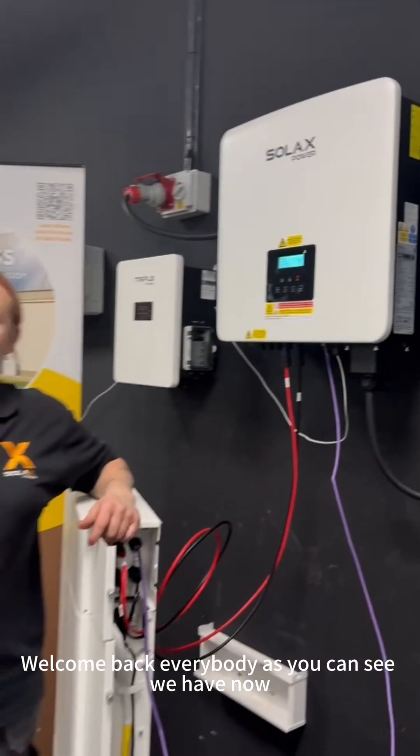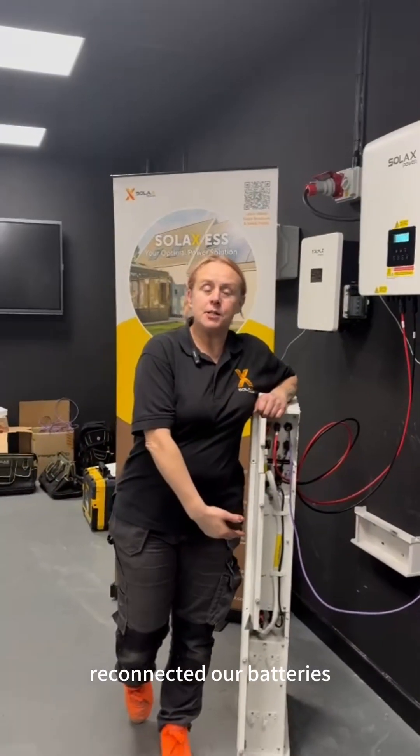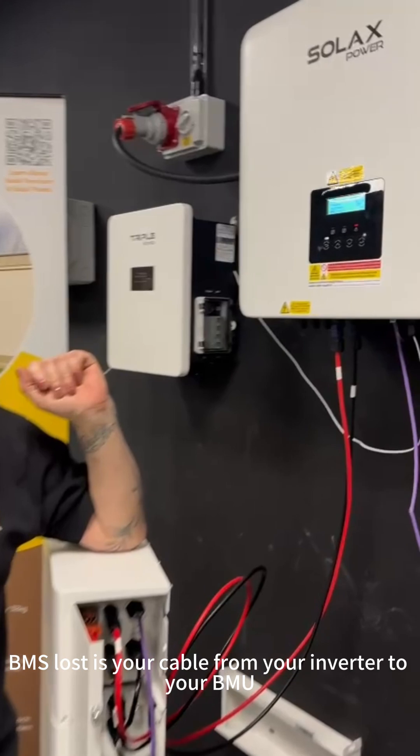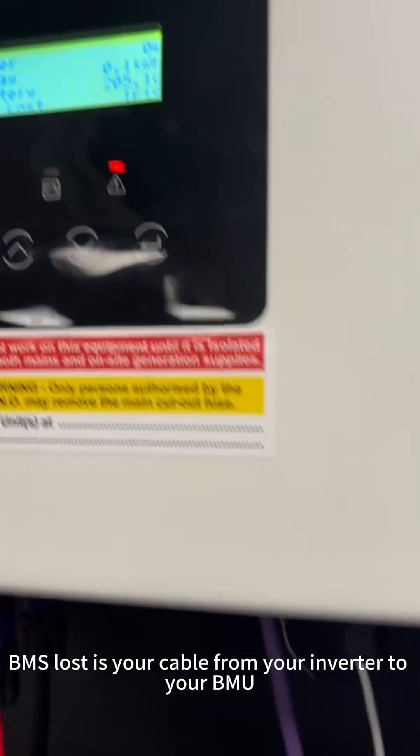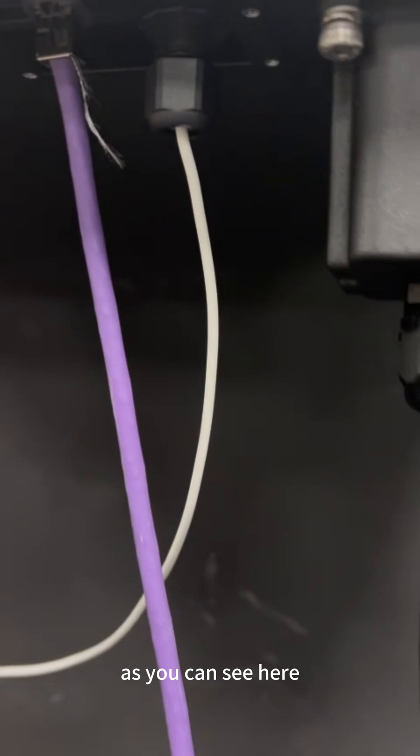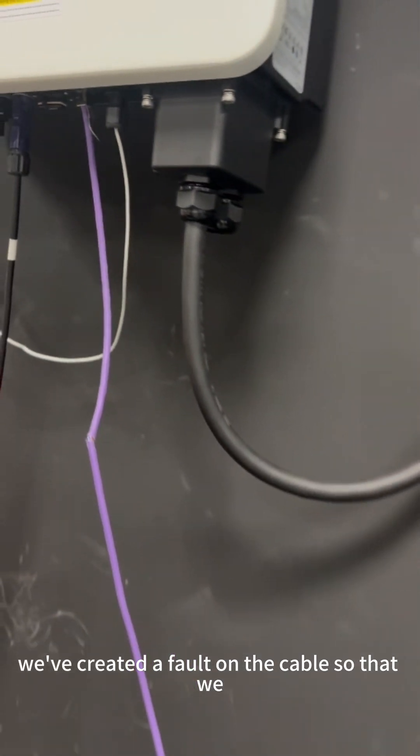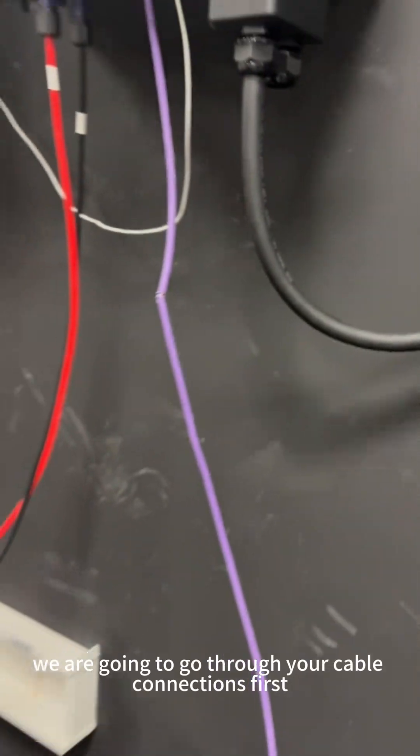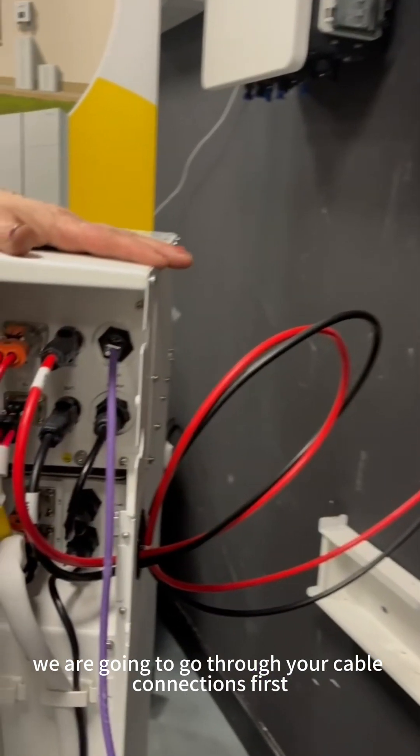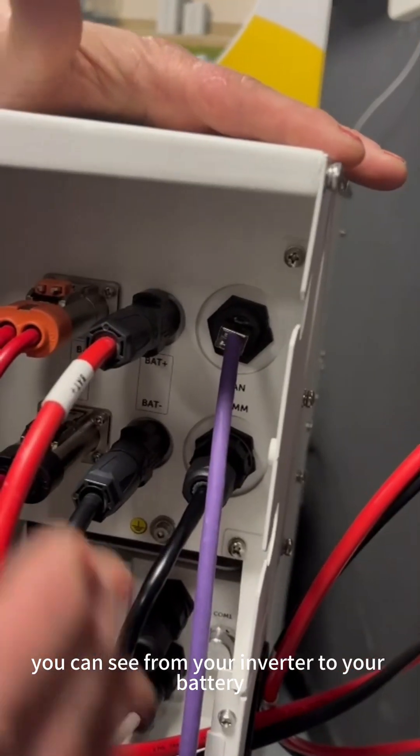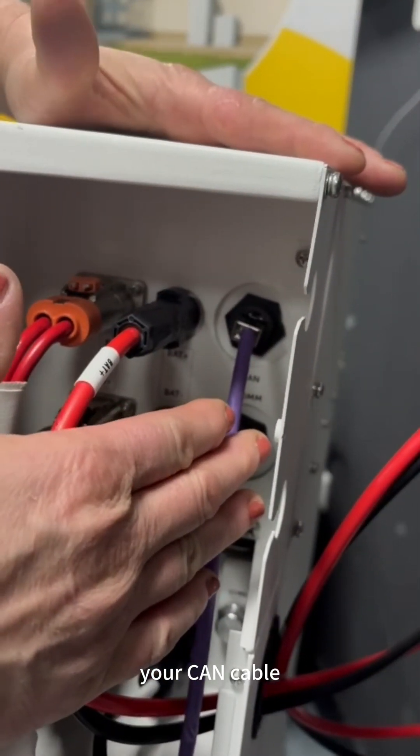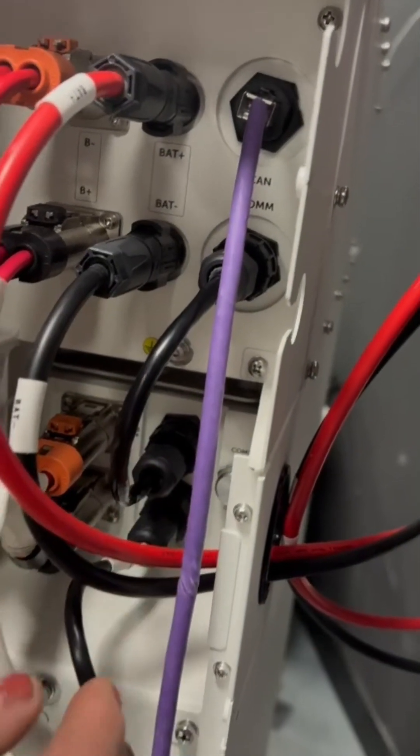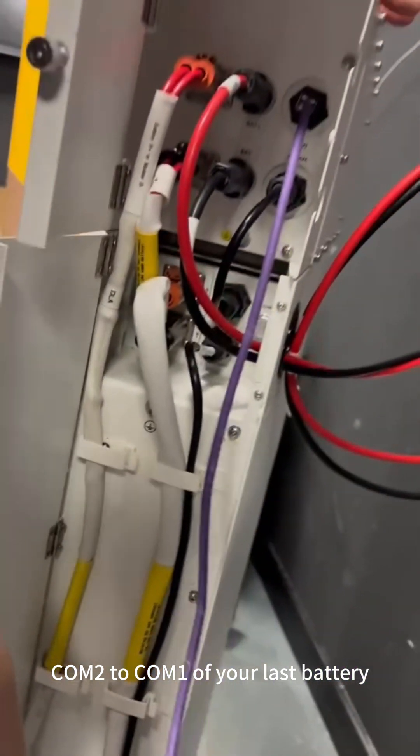Welcome back, everybody. As you can see, we have now reconnected our batteries and we've gone into BMS lost mode. BMS lost is your cable from your inverter to your BMU. As you can see here, we've created a fault on the cable so that we can recreate this fault to show you how to rectify it. We are going to go through your cable connections first. You can see from your inverter to your battery, your CAN cable. Then you go from your comms cable to your COM1, COMS2 to COMS1 of your last battery.